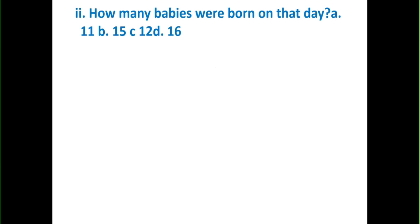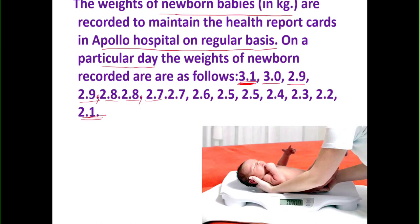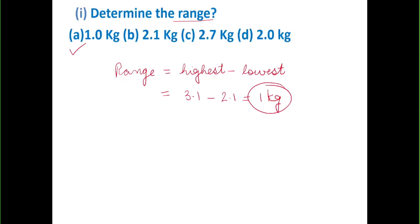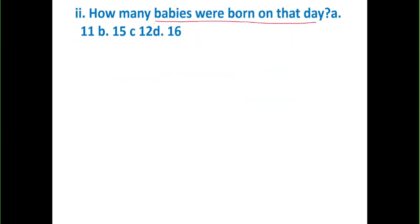The next part from the same question: how many babies were born on that particular day? We can count it easily from the data: 1, 2, 3... counting up to 15. So 15 kids were born on that day. The answer for this part is 15.